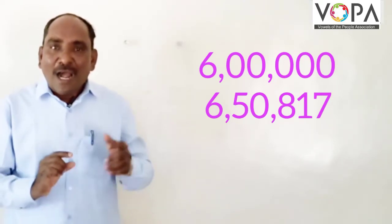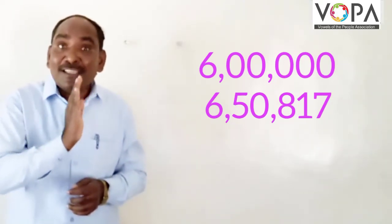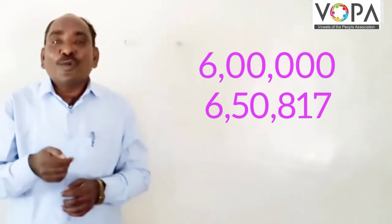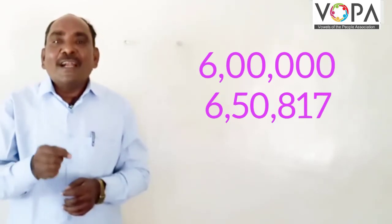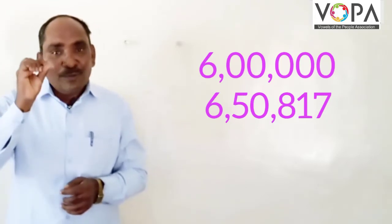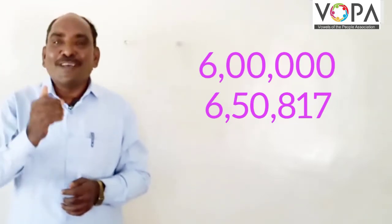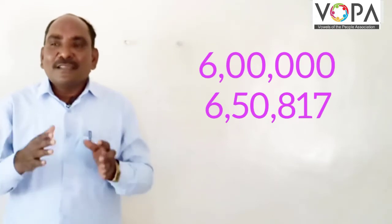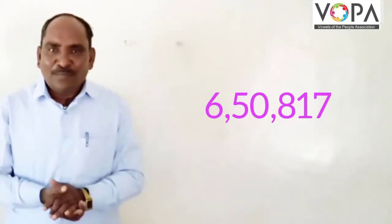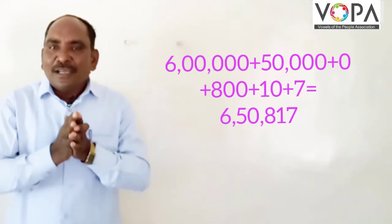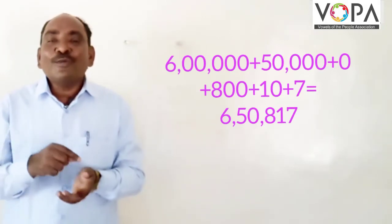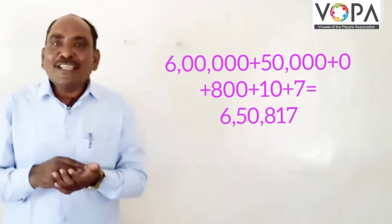In this way we get the place value. Whichever number is given, you write that number and in front of it you give the required zeros, and you get the place value. Then for the expanded form, in the six-digit number, you write the first digit followed by its zeros.